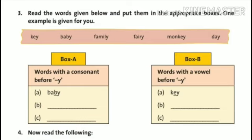Now moving further on page number 20. Part 3. Read the words given below and put them in the appropriate boxes. One example is given for you. Here, few words are given to you. And you have to pick the words with a consonant before Y for box A and words with a vowel before Y for box B.